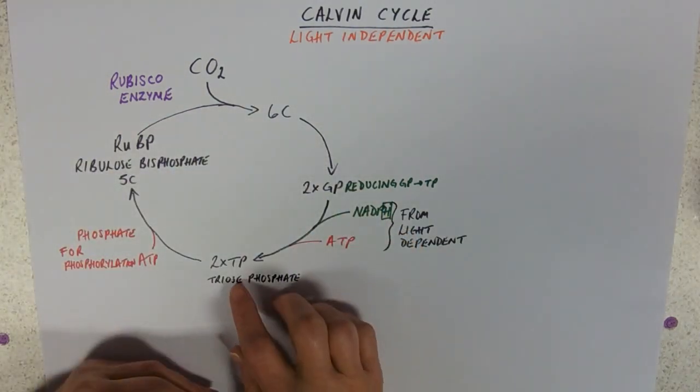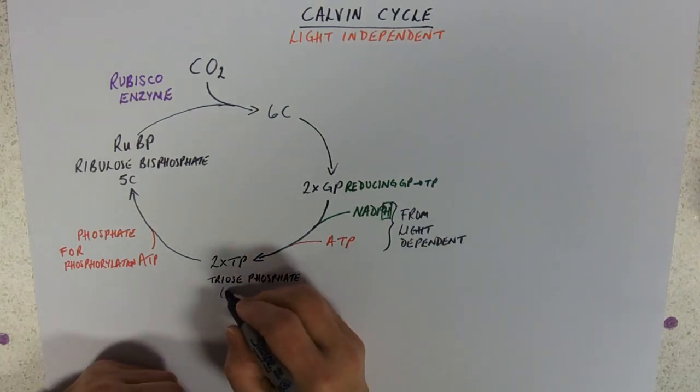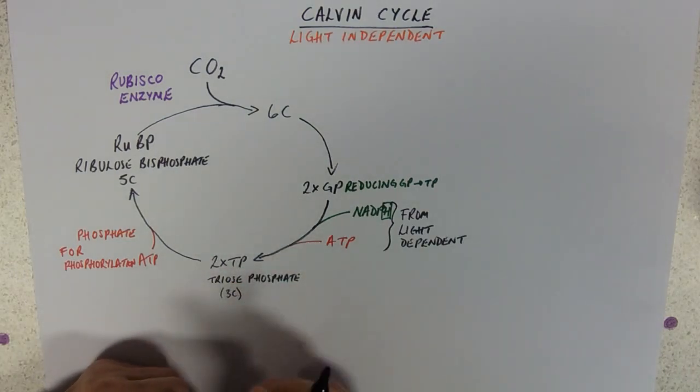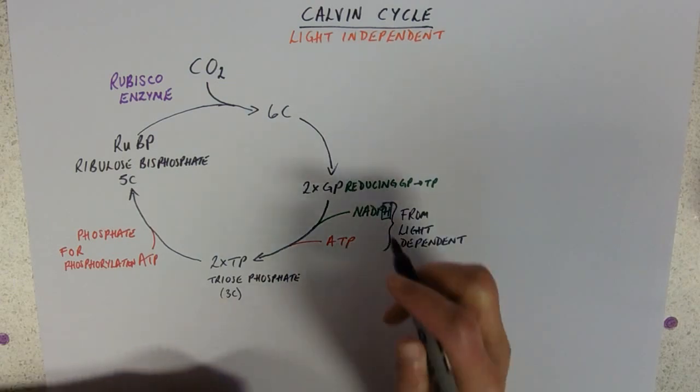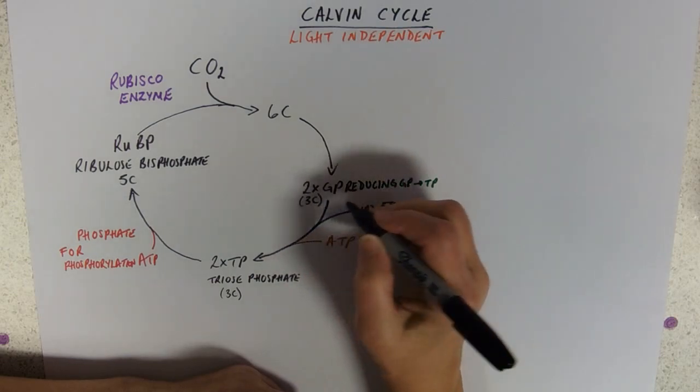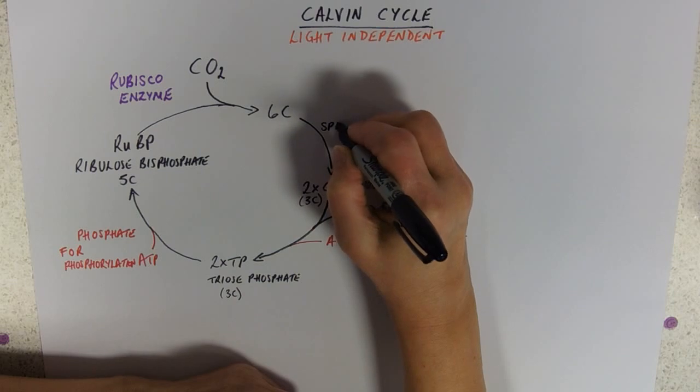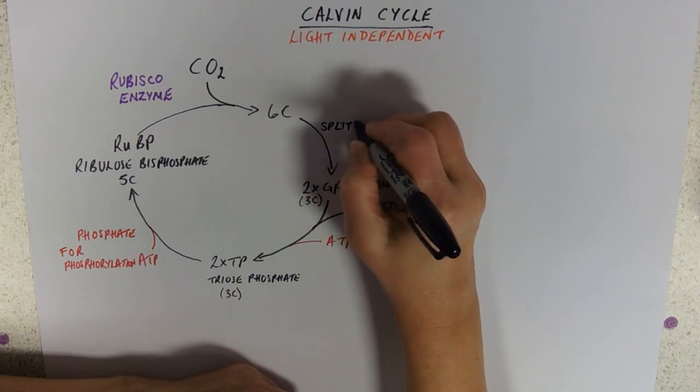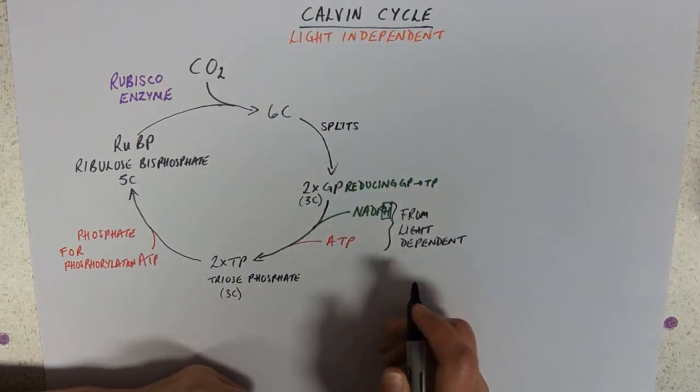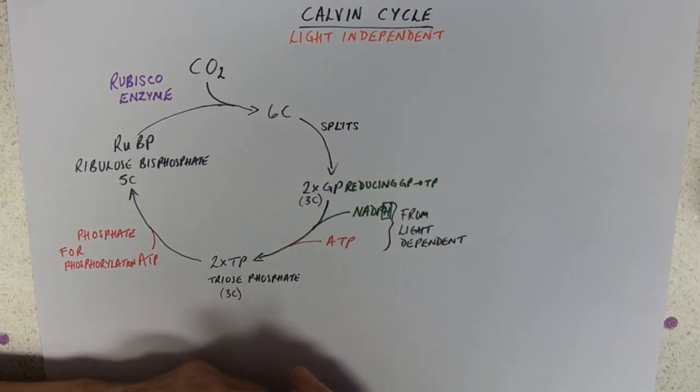And then, if this is triose phosphate, that means it's got three carbons. If we're getting two GPs out of our six carbon compound, that must also be three carbons. So this must be a splitting. So we've broken up our six carbon compound into two three carbon compounds.